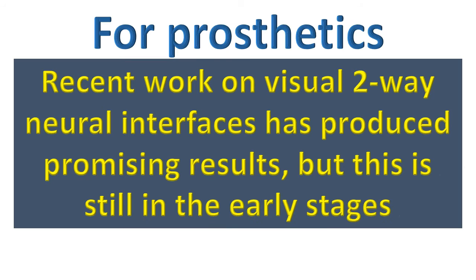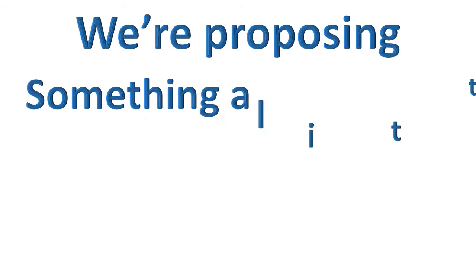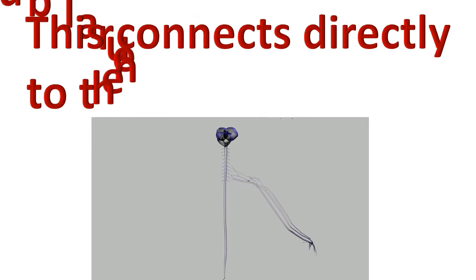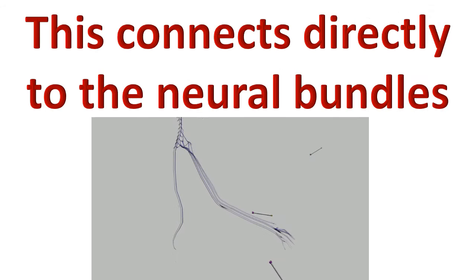What is being proposed here is something that is a little more advanced. What is shown here are two-way neural interface units that connect directly to the neural bundles of a limb, and provide a means of connecting to a prosthetic that possesses the ability to sense touch, temperature, and pressure changes.